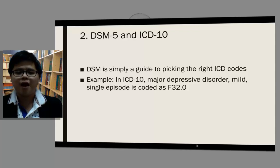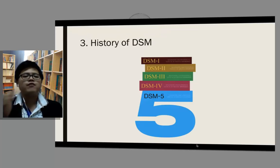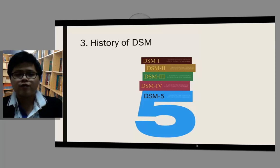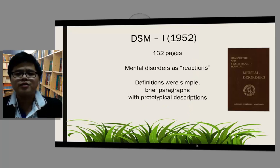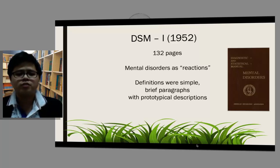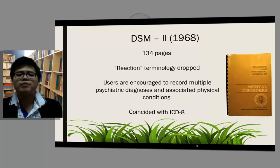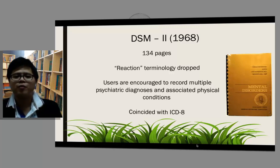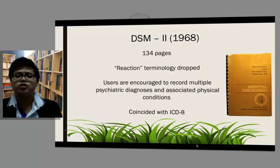Let's have a brief look at the history of DSM. We have DSM-1 through DSM-5 throughout the years. DSM-1 was first published in 1952 and has 132 pages. Mental disorders were regarded as reactions. The definitions were simple, with brief paragraphs and prototypical descriptions. DSM-2 was first published in 1968. The number of pages increased to 134 pages. Reaction terminology was dropped and users were encouraged to record multiple psychotic diagnoses and associated physical conditions. Its publication coincided with the publication of ICD-8.